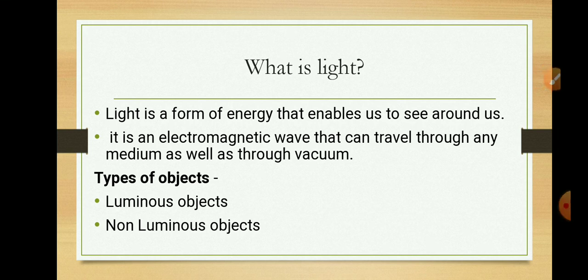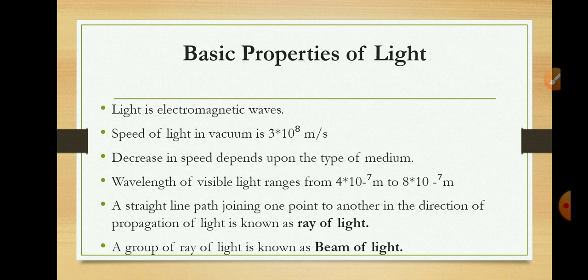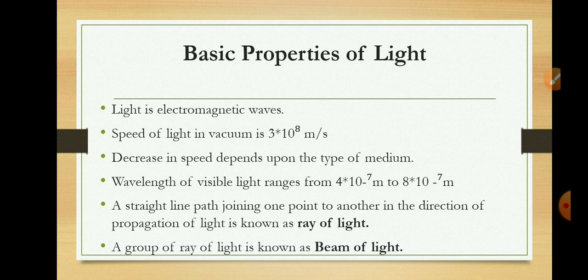Now we will discuss some basic properties of light. Light is a form of energy that travels in the form of electromagnetic waves which do not require any medium for propagation, and so it is also known as non-mechanical waves. Speed of light in vacuum is 3 × 10⁸ meters per second. When light travels through a transparent medium its speed decreases, depending upon the optical density of that medium.